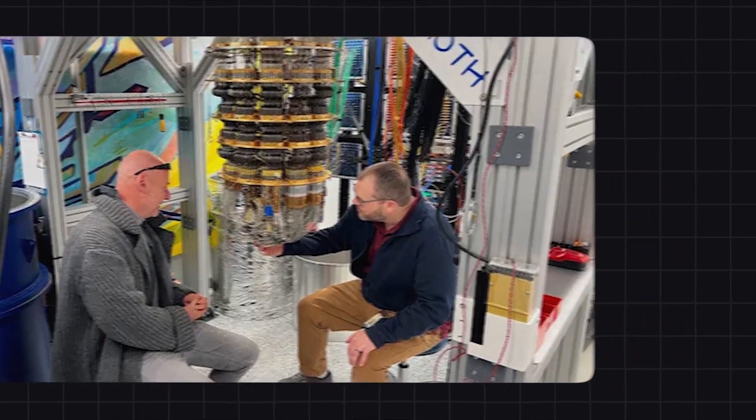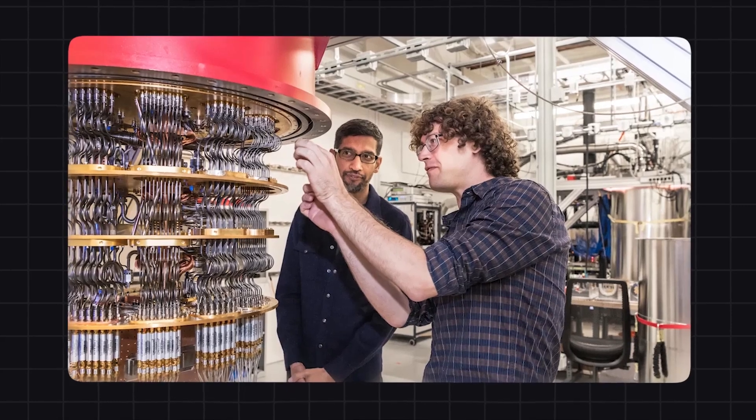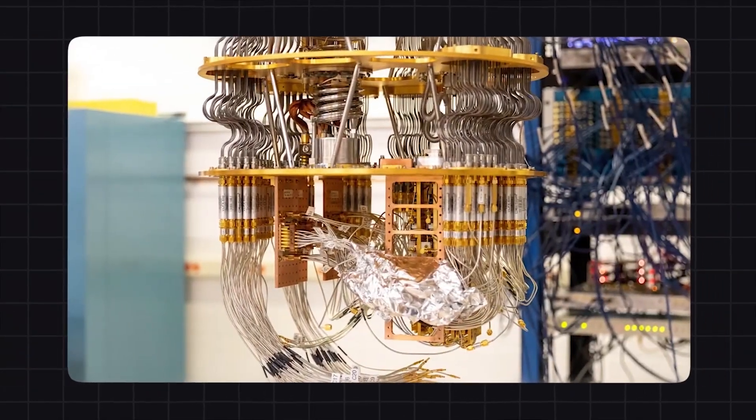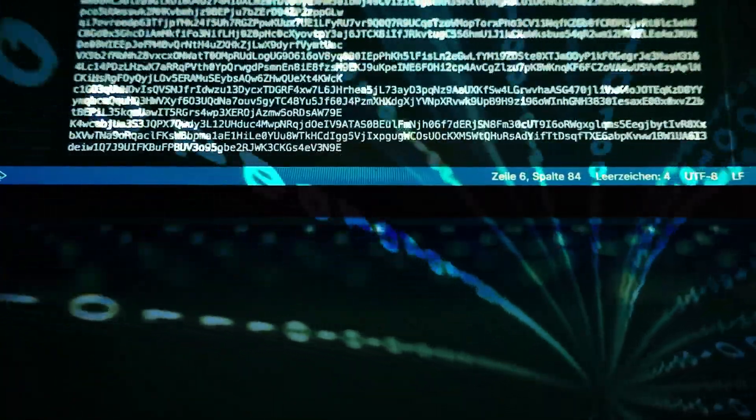It didn't follow the rules of physics as we know them. In fact, it broke every known law. The anomaly was strange. It suggested that the quantum computer might interact with something fundamental, something we've only theorized about. It hinted at the Higgs field, the very force responsible for giving particles mass.